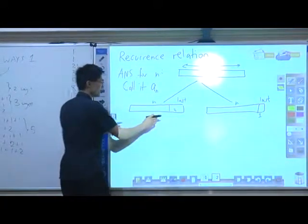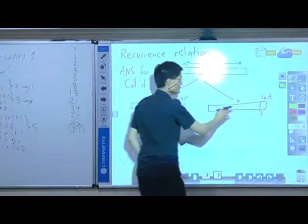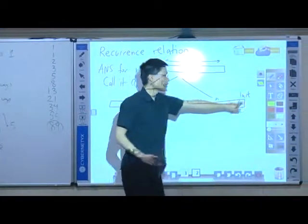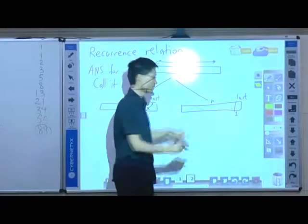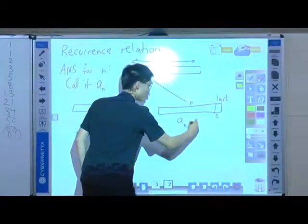But wait a second. Let's look at this one. This one's easier. If it's this kind, where I already know the last one is a square, how many ways can I finish it? a_{n-1}. a_{n-1} ways.